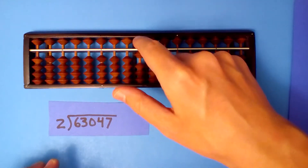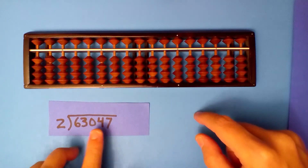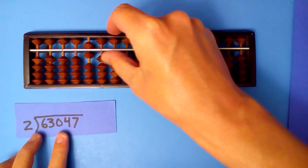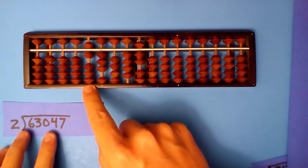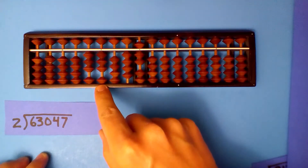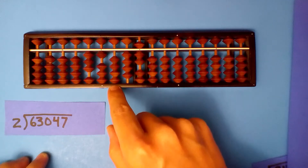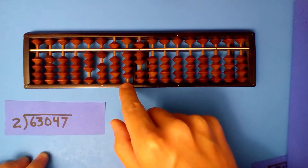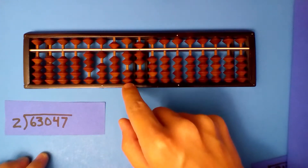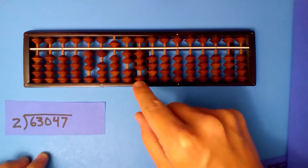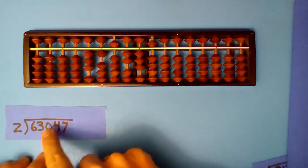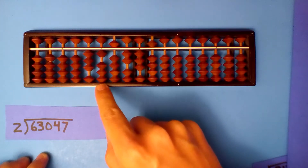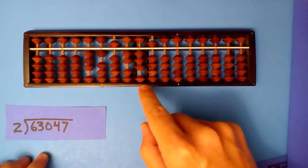Another one. Half of 6 is 3. Half of 6 is 3. Half of 3 is 1 with 1 left over, so we take half of 10 now — 5. Half of 4 is 2. Half of 7 is 3 with 1 left over. Half of 10 is 5. So half of this number is 31,523.5.